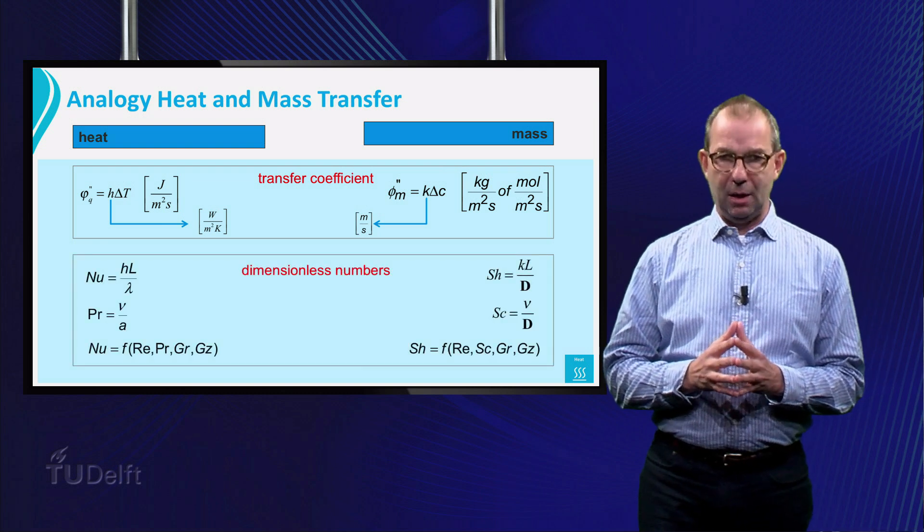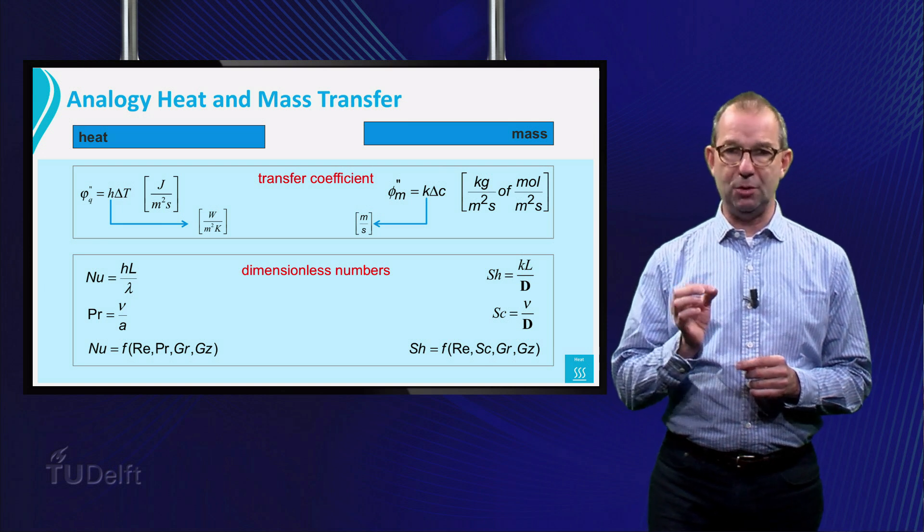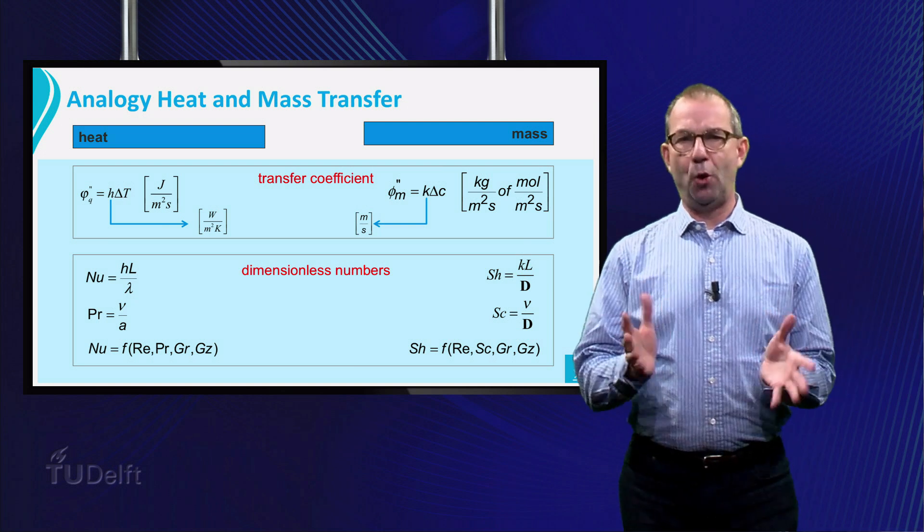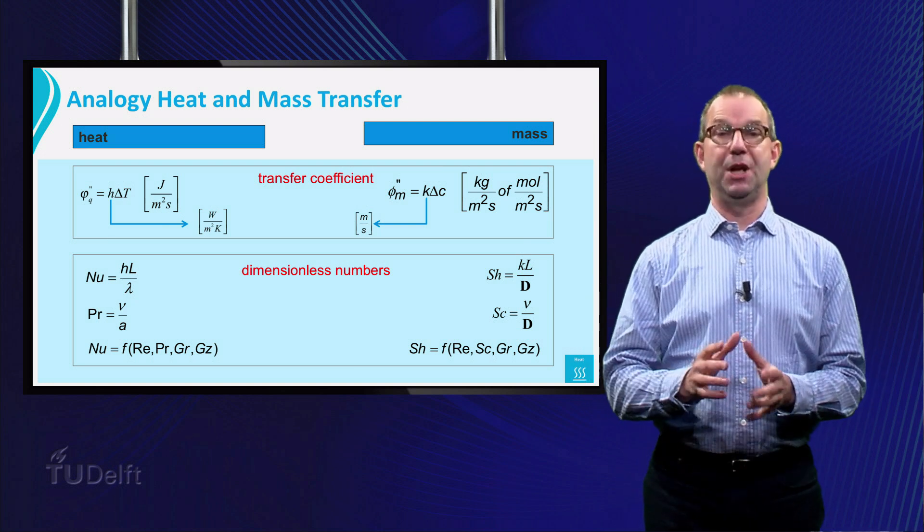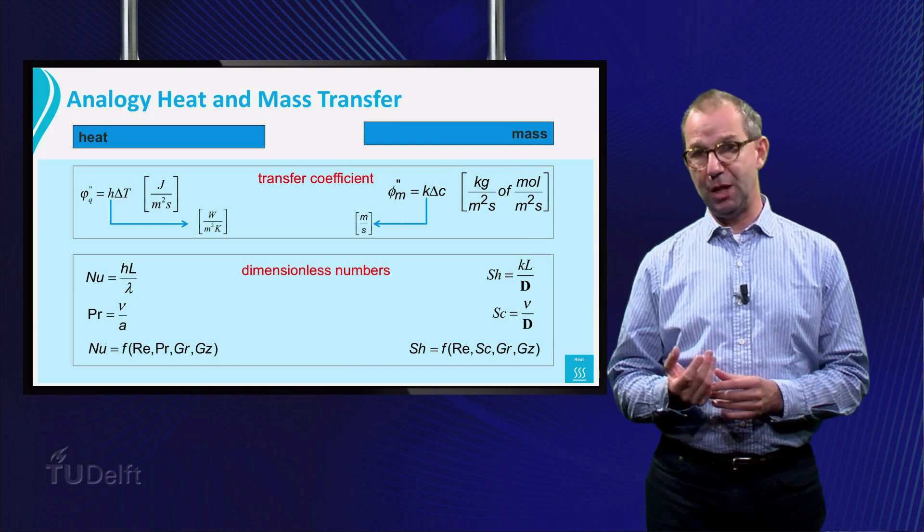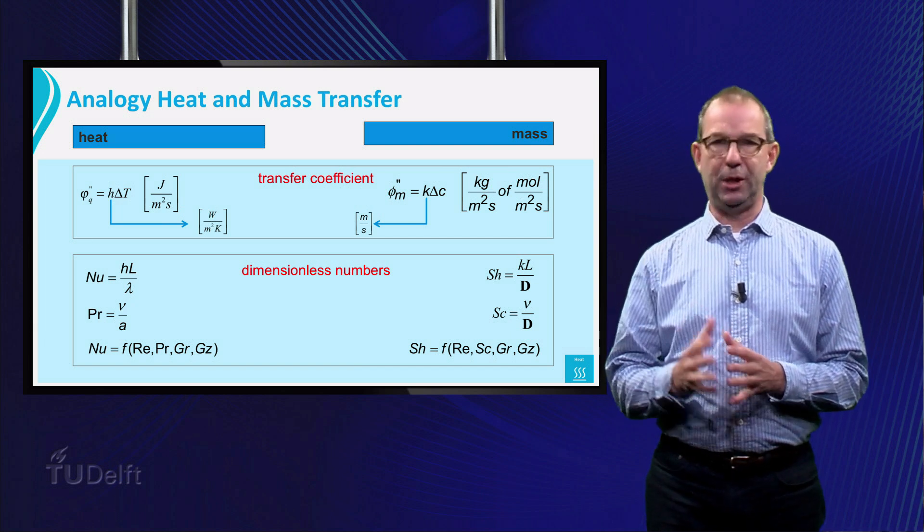We found that we can make these dimensionless by comparing them to the estimate of h or k for diffusion. So we formulate heat and mass transfer in terms of Nusselt and Sherwood numbers. For flowing cases, these are a function of the Reynolds number, Prandtl, Grashof and Grads for heat.